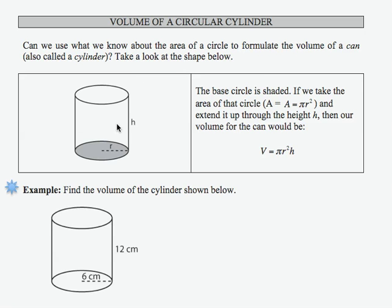In this example, we want to find the volume of the given cylinder. We're going to use the formula V equals pi r squared h.